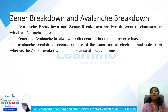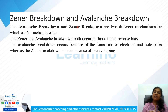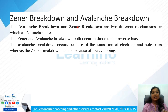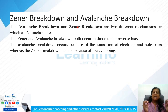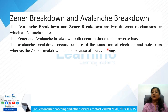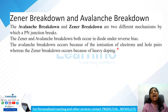Now an important topic: the difference between Zener breakdown and avalanche breakdown. Both occur under reverse bias conditions but for different reasons. The avalanche breakdown occurs due to the ionization of electron-hole pairs, whereas the Zener breakdown occurs because of heavy doping.